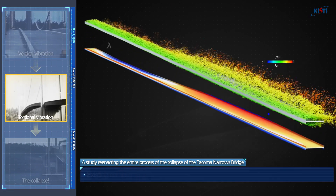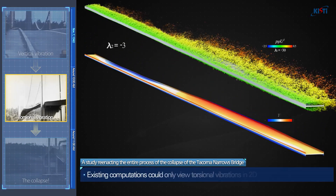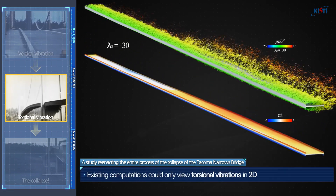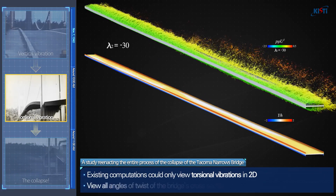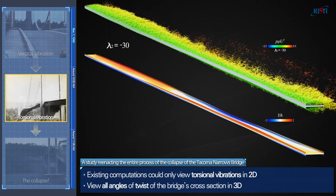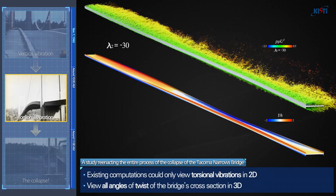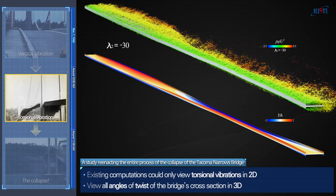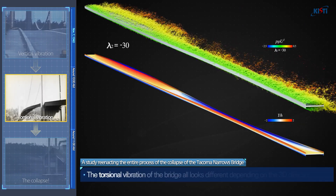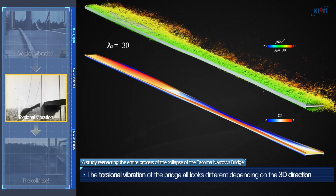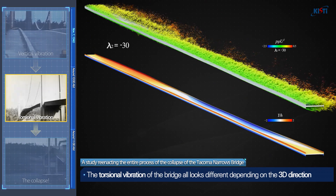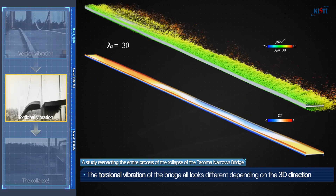While existing computations could only view the torsional vibration in two dimensions, we were able to view all the angles of twist of the bridge's cross section in three dimensions. Accordingly, we were able to find that the torsional vibration of the bridge looks different depending on the 3D direction.